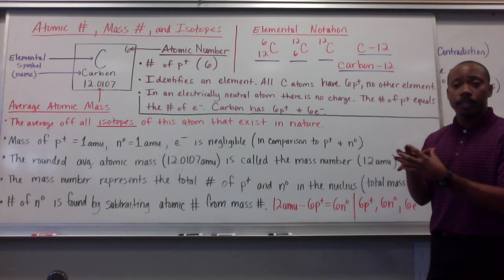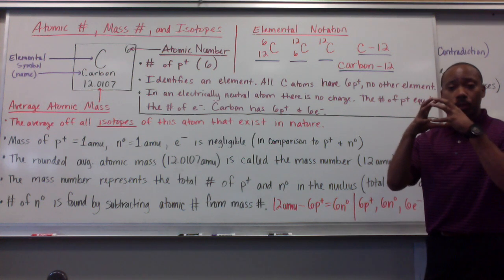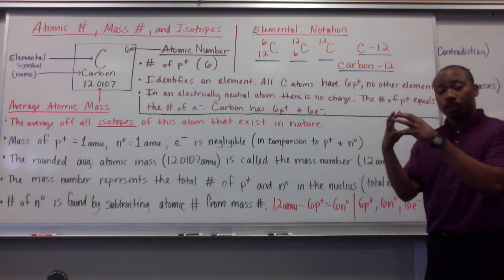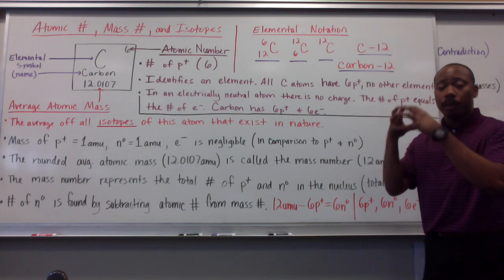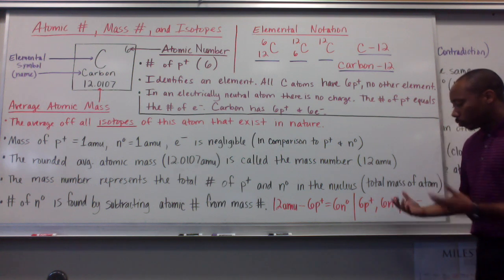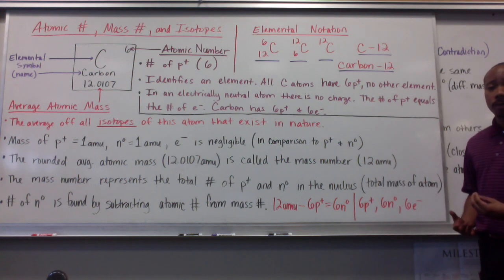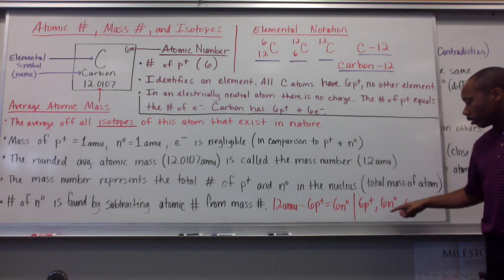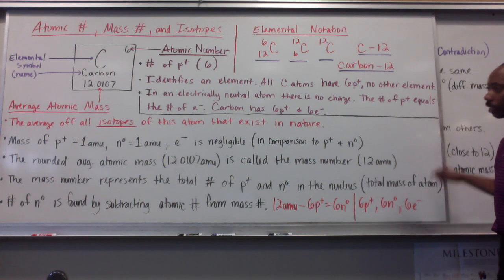That makes sense because if my entire nucleus is made of 12 amus and 6 of them are neutrons, sorry, 6 of them are protons, that must mean the other 6 are neutrons. So, total subatomic particle count for carbon, 6 protons, 6 neutrons, and 6 electrons.